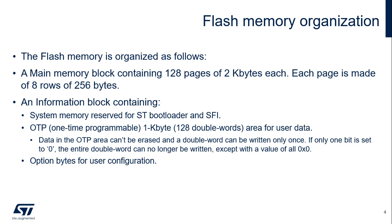The second part is a 1 kilobyte one-time programmable area. The OTP area cannot be erased, and a double word can be written only once. If one double word bit is at zero, the entire double word can no longer be written, except with the value all zeros. Programming a previously programmed double word is only allowed when programming all zeros. The last part contains the option bytes for configuring user options.